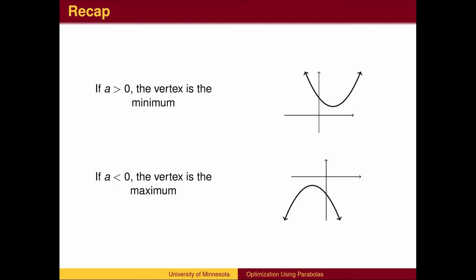To recap, if a is positive, the vertex will be the minimum point on the parabola. If a is negative, the vertex will be the maximum point on the parabola.